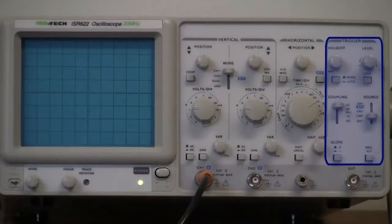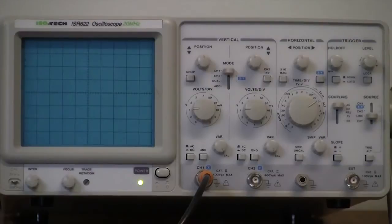The group of trigger controls on the right of the oscilloscope is used to ensure that the input signal is displayed correctly on the oscilloscope screen.